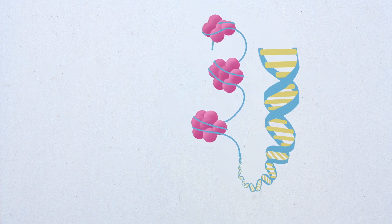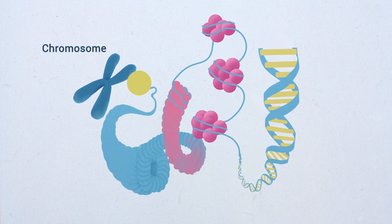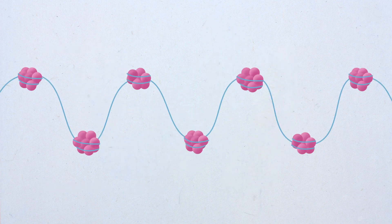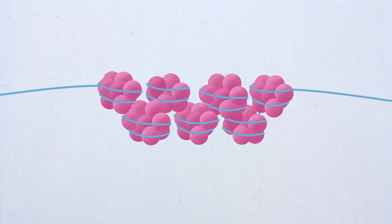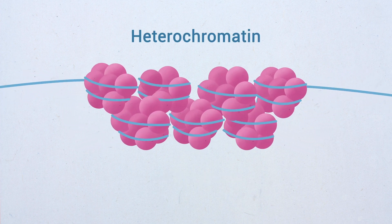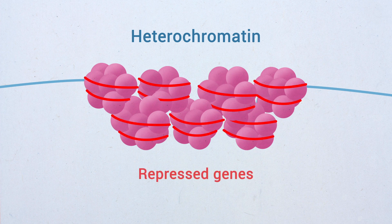These nucleosomes are then organized into higher order arrays called chromatin. While loosely packed chromatin tends to contain genes that are highly active in cells, tightly packed chromatin, called heterochromatin, tends to contain repressed genes.